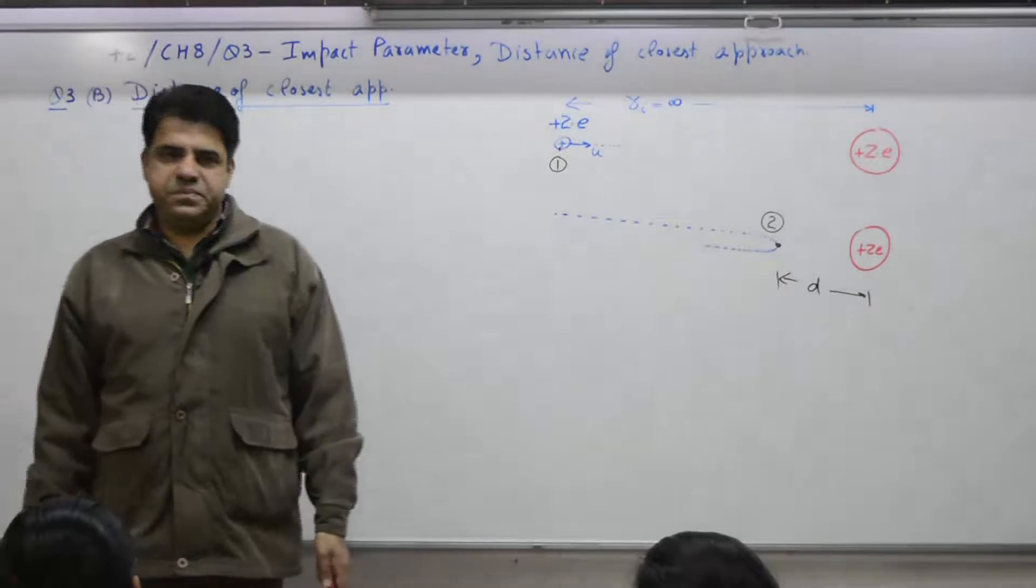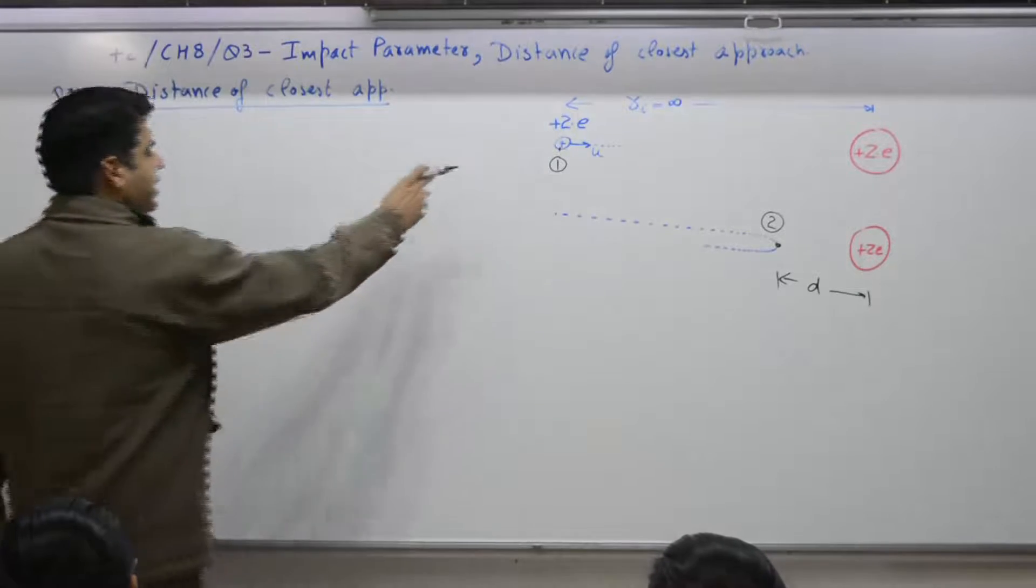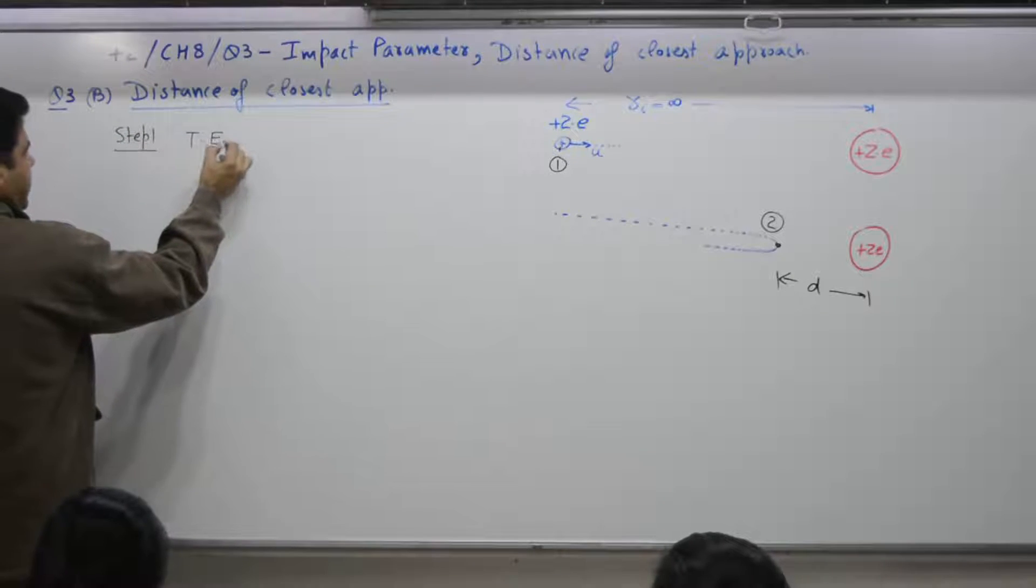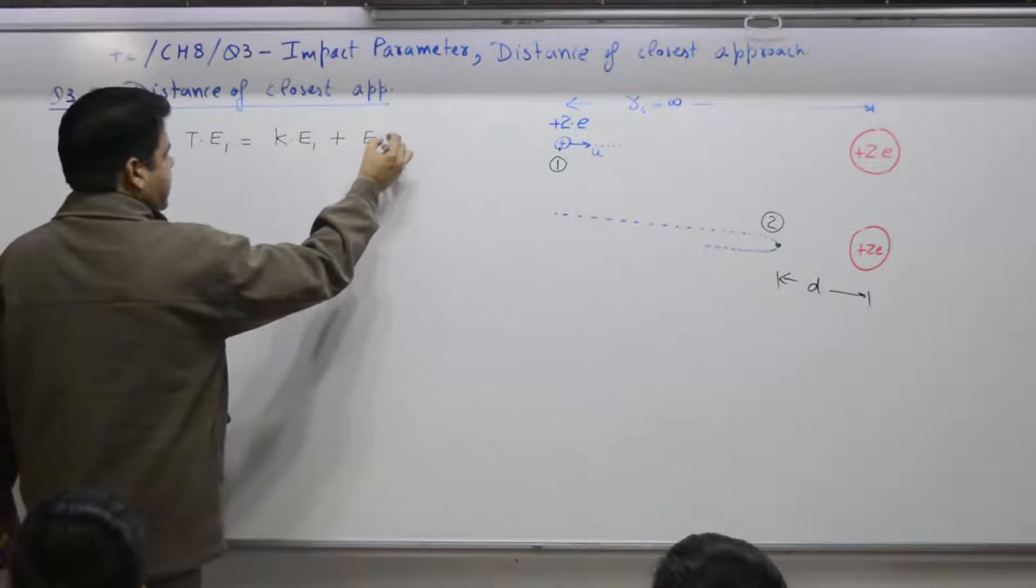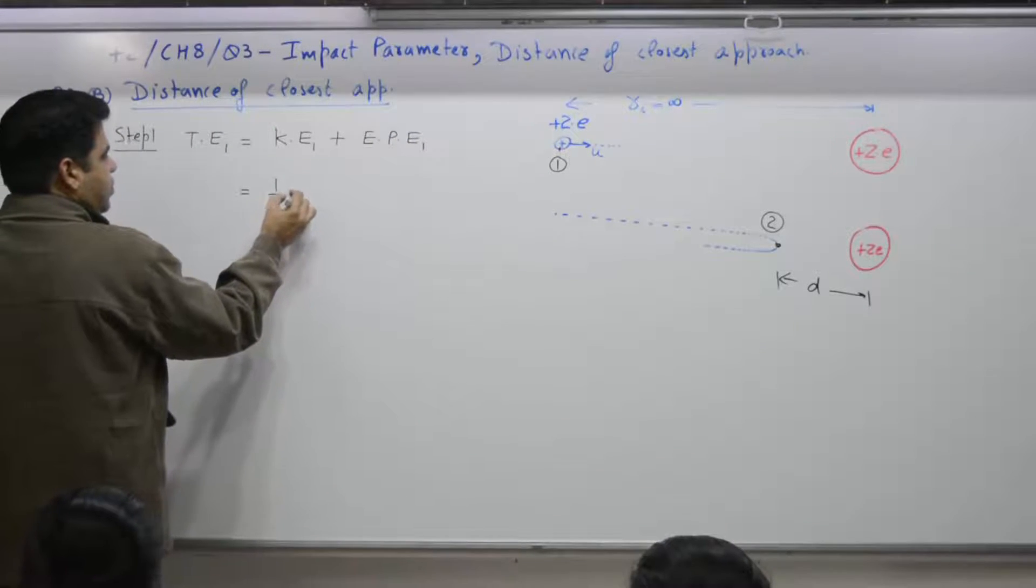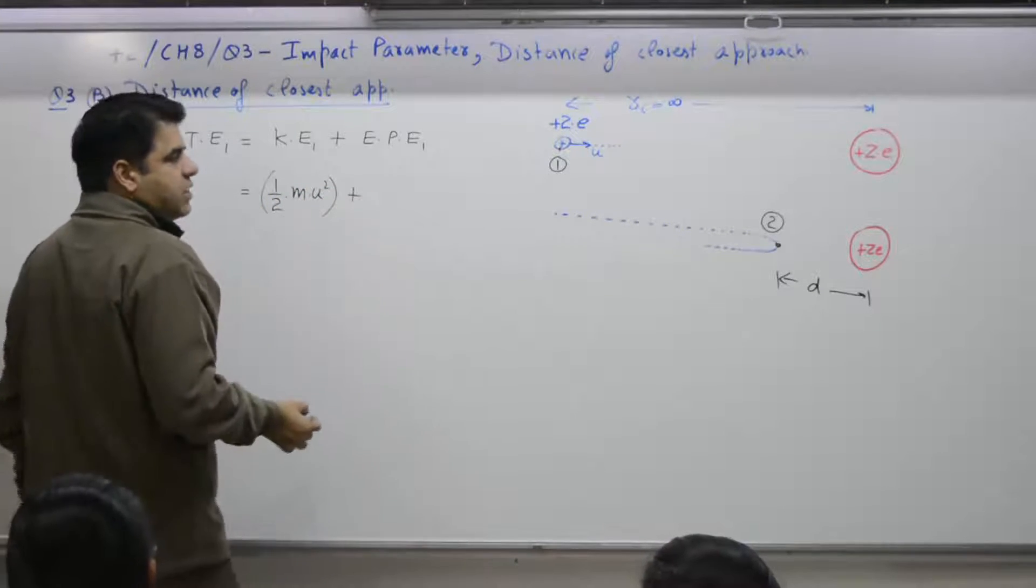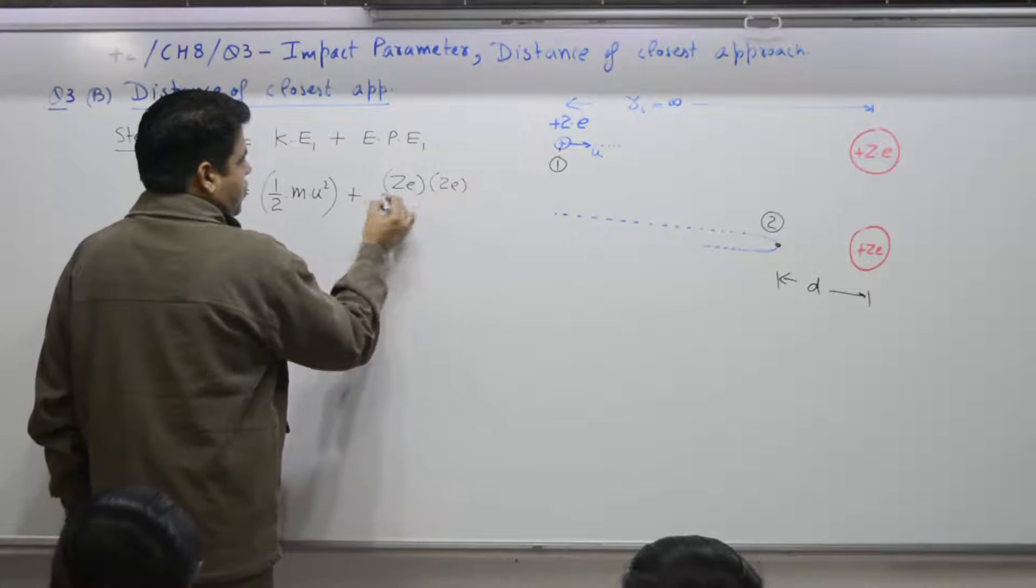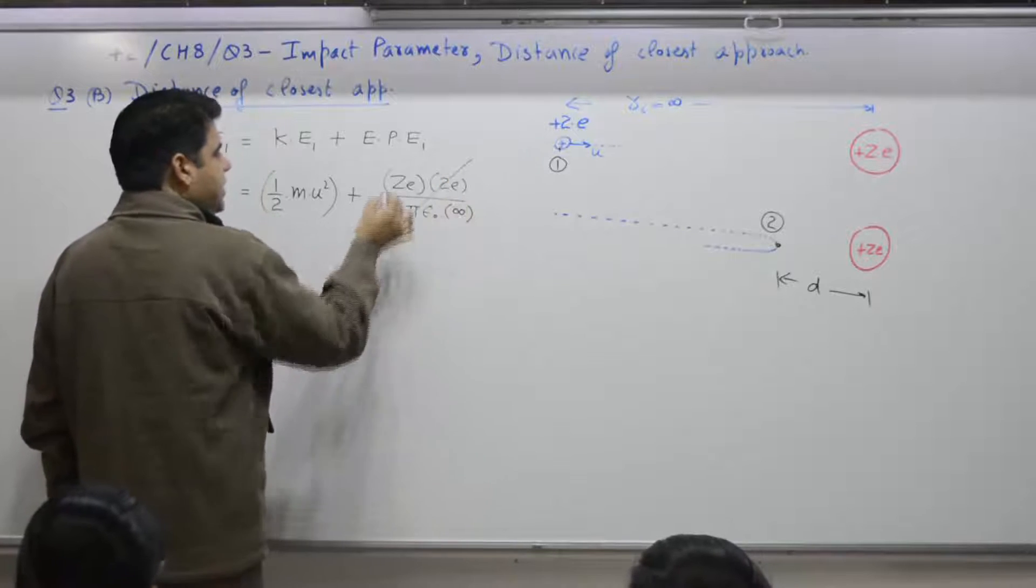What are the energies involved? Kinetic and electric potential energy. At 1. Yes. Step 1. Total energy at 1 is kinetic energy at 1 plus electric potential energy at 1. Kinetic energy at 1 is what? 1 by 2 m u square. We may write as k in future. Electric potential energy. Yes. Q1, Q2. Q1, Q2 over 4 pi epsilon of distance. Distance is what? Infinity. So, this parameter is what? 0.